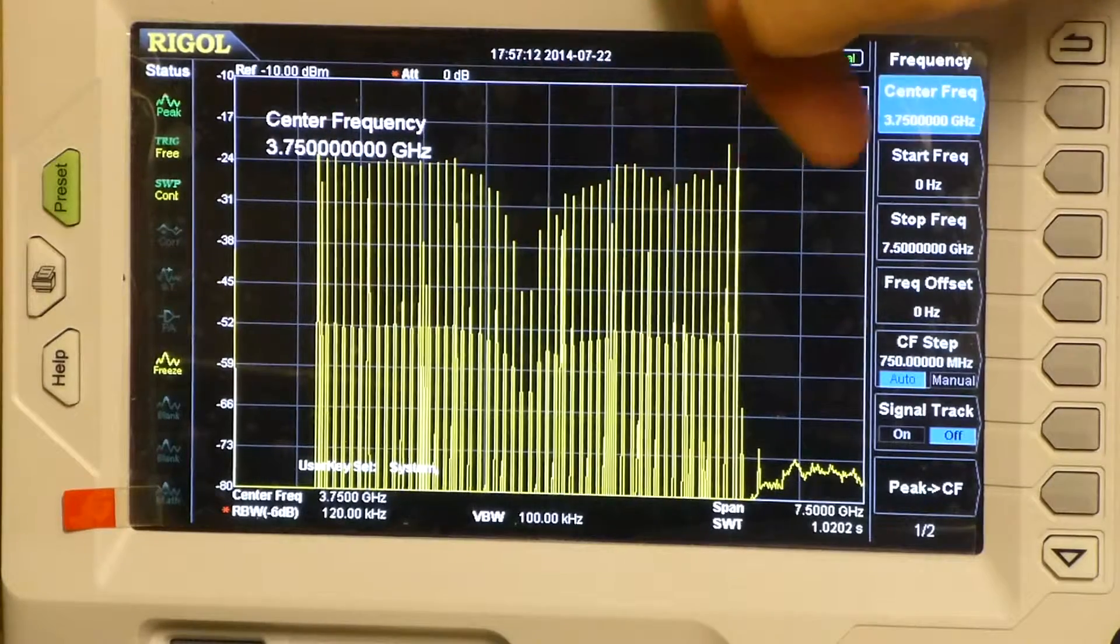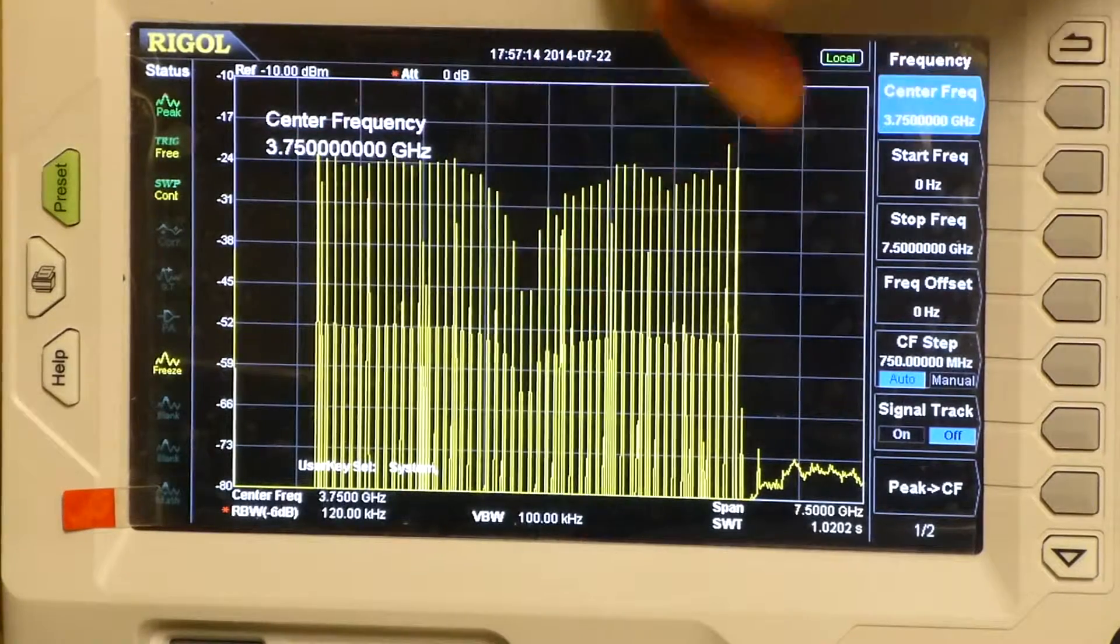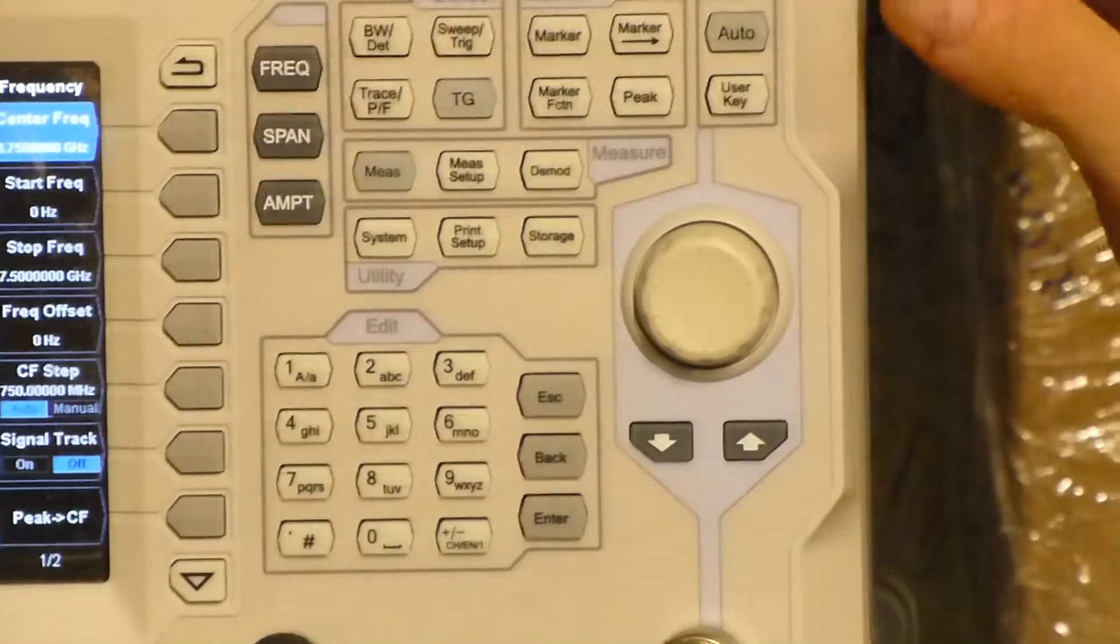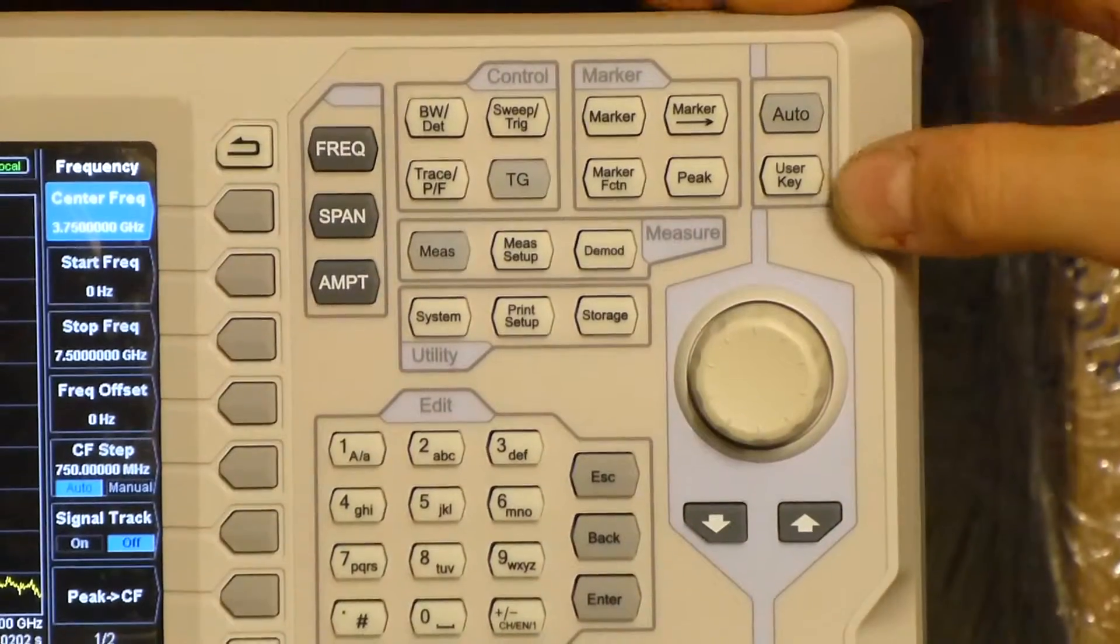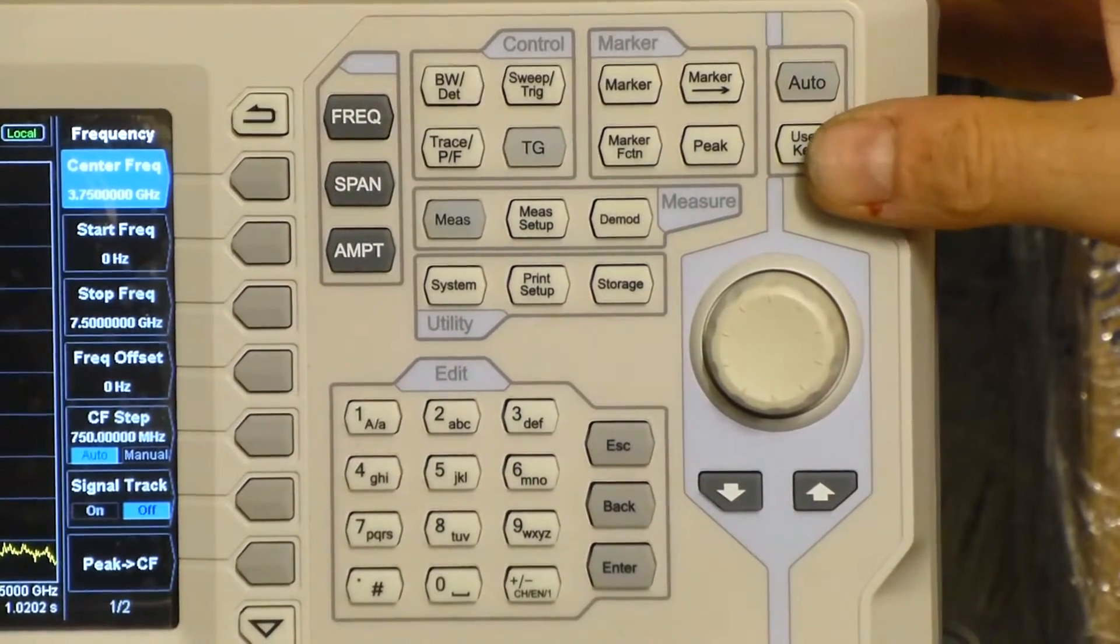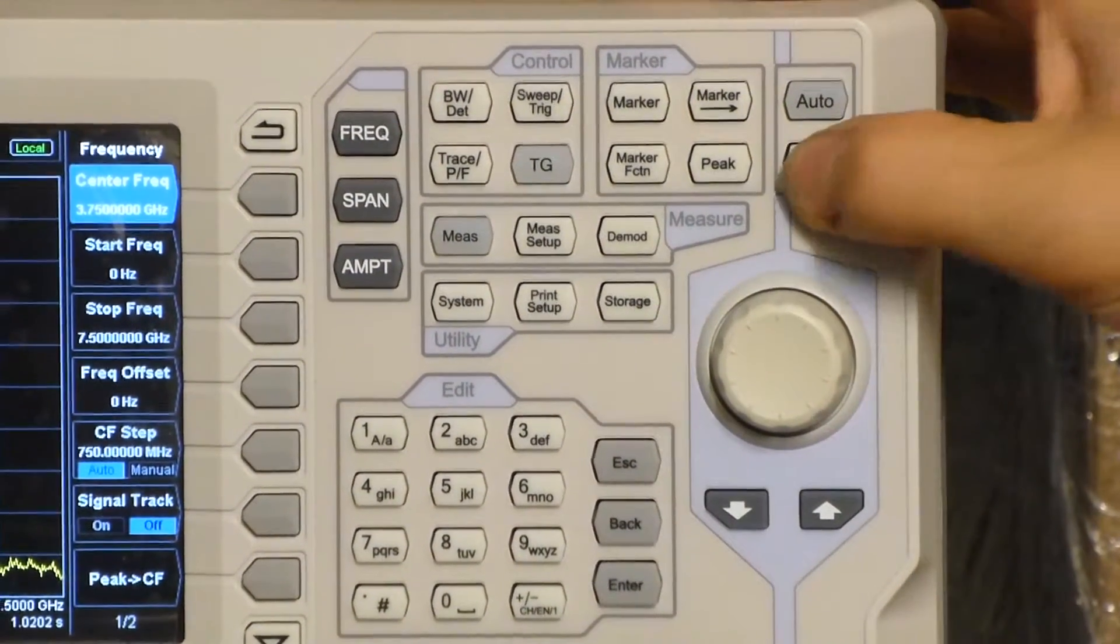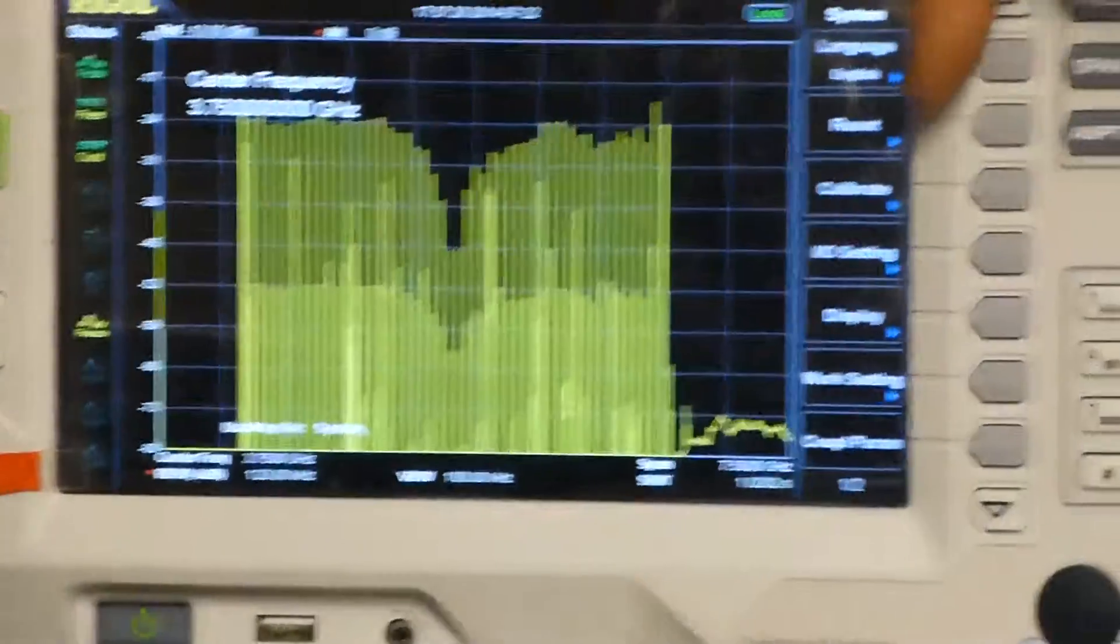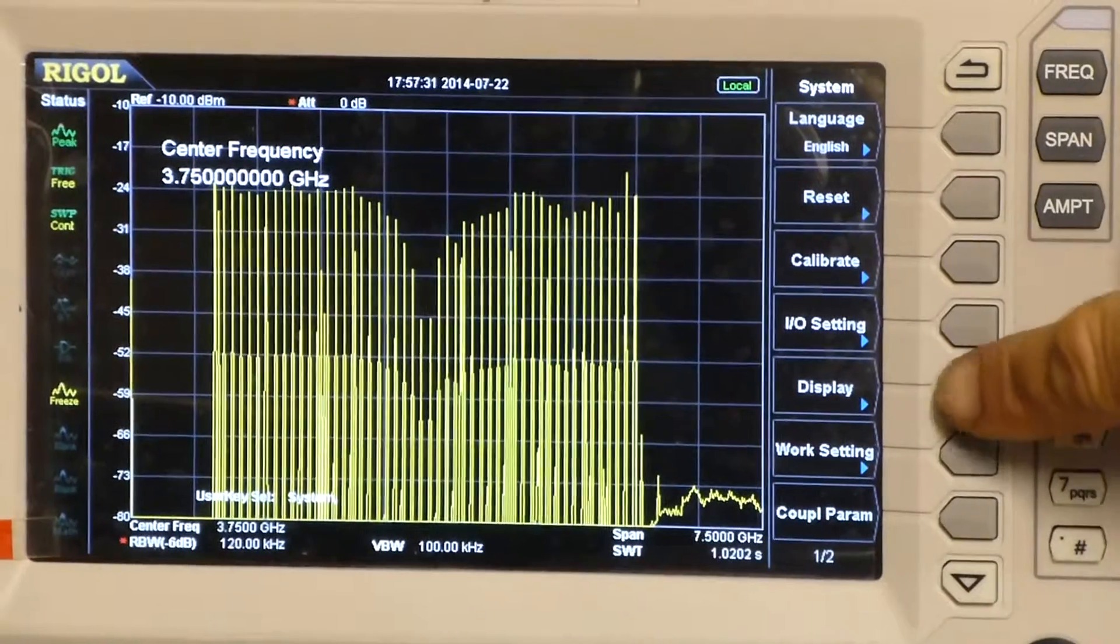And as you can see, it's provided a quite interesting dip or notch. What I'm going to show you today is the user key. The user key over here has a display line feature on the DSA800. So if I push the user key, you can see over here on the menus a display function.